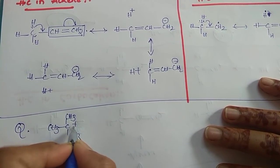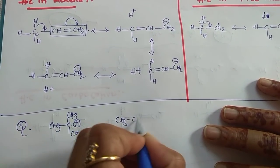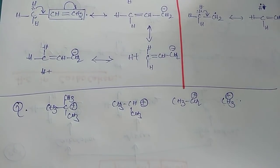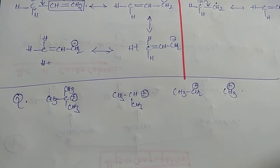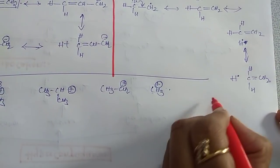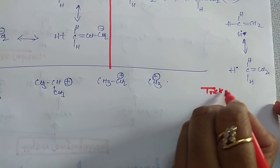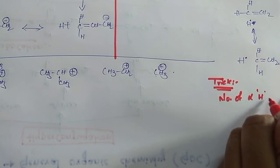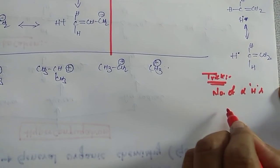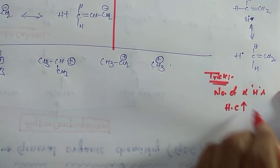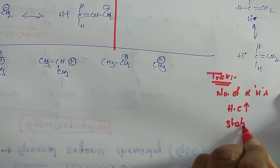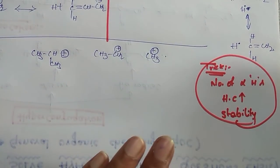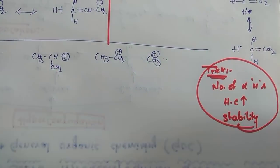Now I am going to do questions. Consider: CH₃⁺, CH₃CH⁺, and others — which among these four is most stable? The easiest method: count the alpha hydrogens. More alpha hydrogens means more hyperconjugative structures, which means more stability. For any structure, first count the number of alpha hydrogens — more alpha hydrogens equals more stability.